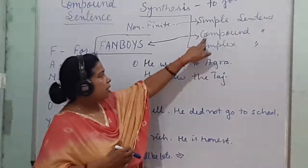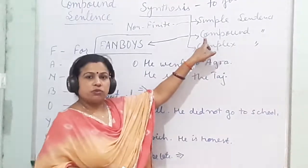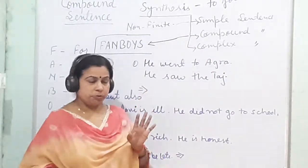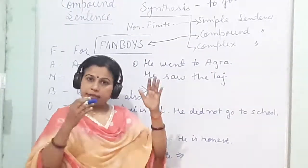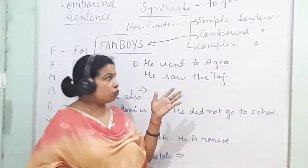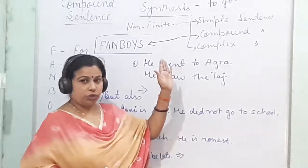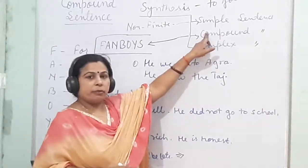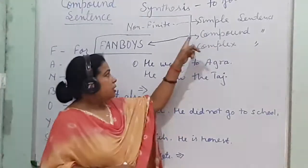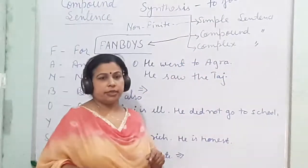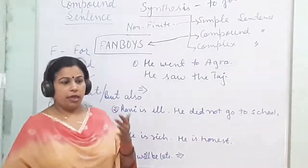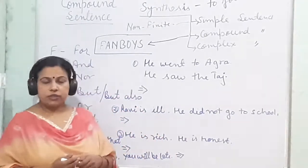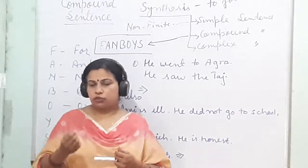In this video, we will discuss about the second type of sentence — Compound Sentence. Clause Part 1 में तीन types of clauses और तीन types of sentences की चर्चा की थी. Sentence की तीन types का परिचय करा चुके हैं. Simple Sentence के बारे में Clause Part 2 में discuss किया है, और इस video में sentence का दूसरा type — Compound Sentence — क्या होता है, कैसे बनता है, क्या process है, compound sentence बनाने का, we are going to discuss.